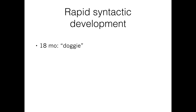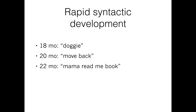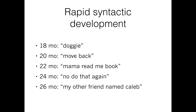Syntactic development is very fast. Here are some examples from my daughter Madeline. At 18 months, she was only saying single words like 'doggy,' but her sentences quickly got longer. At 20 months, she said 'move back.' At 22 months, 'mama read me book.' At 24 months, 'no do that again.' And at 26 months, she was saying things like 'my other friend named Caleb.'